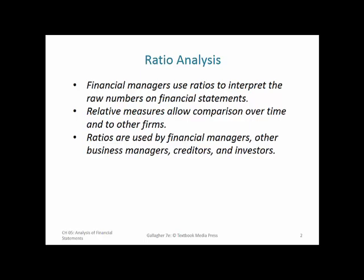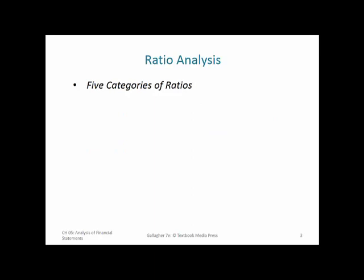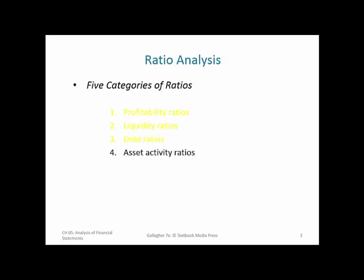What we're doing with financial statement analysis is ratios. Ratios allow us to look at the numbers on financial statements and determine the health and performance of the corporation. There are five categories of ratios, and we're only going to delve deeply into four of them: profitability, liquidity, debt, asset activity, and market value.